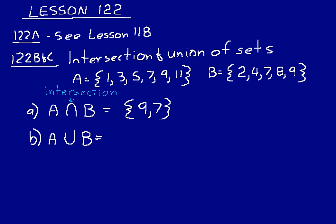What you would have is 1, 2, 3, 4, 5—there's no 6 in either one. Now, there's a 7 in both of them, but we just write the 7 one time. There's an 8 in B, then 9, then 11. So this would be A union B.